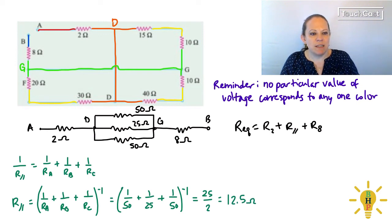So now, easy peasy, we can come up here. We now have our 2 ohms in series with our parallel network that had a resistance of 12 and a half ohms in series with 8 ohms, and we get an equivalent resistance of 22 and a half ohms for this network.